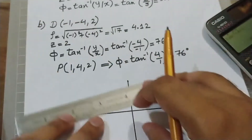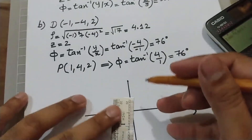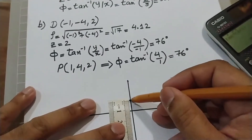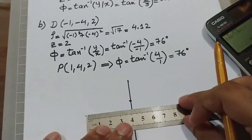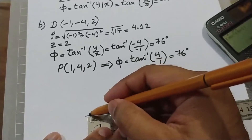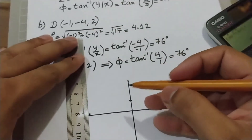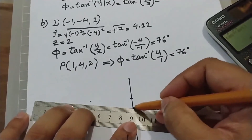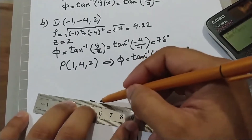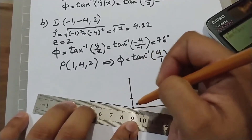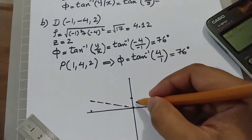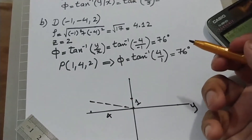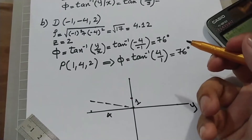We are only interested in x and y for phi. Taking x = -1 and y = -4, we get a point in the third quadrant. The line to this point has x-magnitude 1 and y-magnitude 4.